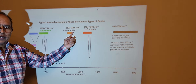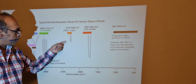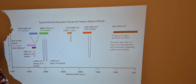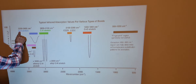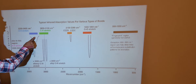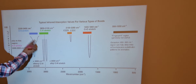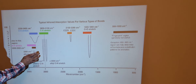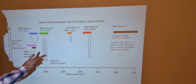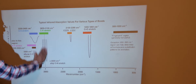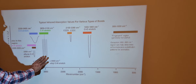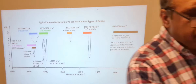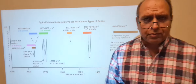Carbon triple bond nitrogen (nitrile) and carbon triple bond carbon (as in ethyne) give smaller peaks in the triple bond region. Oxygen-hydrogen bonds in water or alcohols absorb around 3,200 to 3,400 — a big broad absorbance often indicating hydrogen bonding. Carbon-hydrogen absorbances appear in their own region.